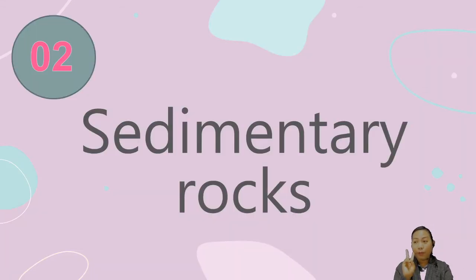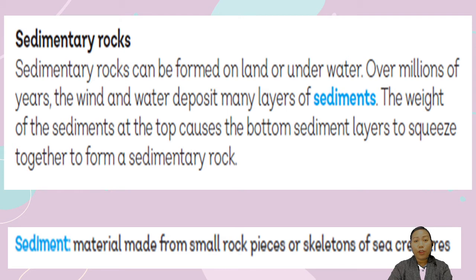Now let's move on to sedimentary rocks. Sedimentary rocks are rocks that can be formed on land or underwater. Over millions of years, wind and water deposit many layers of sediments. Sediments are materials made from small rock pieces or skeletons of sea creatures. For a long period of time, these sediments settle down, and the weight causes the bottom layers to squeeze together to form sedimentary rock.